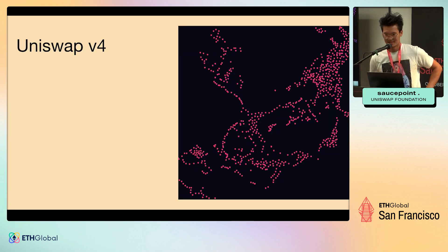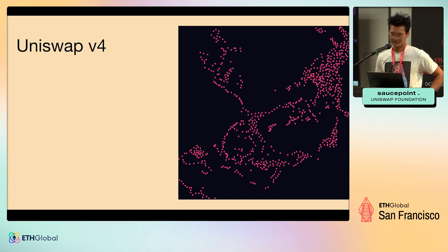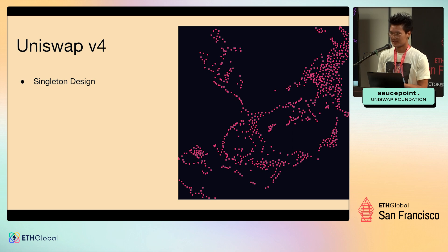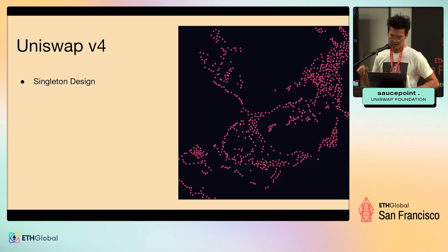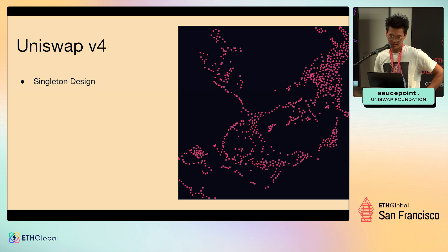Quickly on what Uniswap v4 is and all the features: first is the singleton design. What that means is every pool is managed by a single contract. This is different than v2 and v3 where every pool or every trading pair existed as its own smart contract. So if you wanted to trade across multiple pools, you're transferring tokens between every single pool.